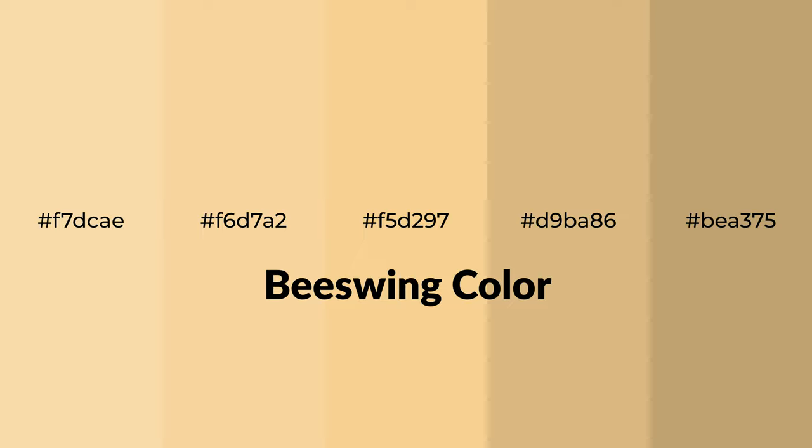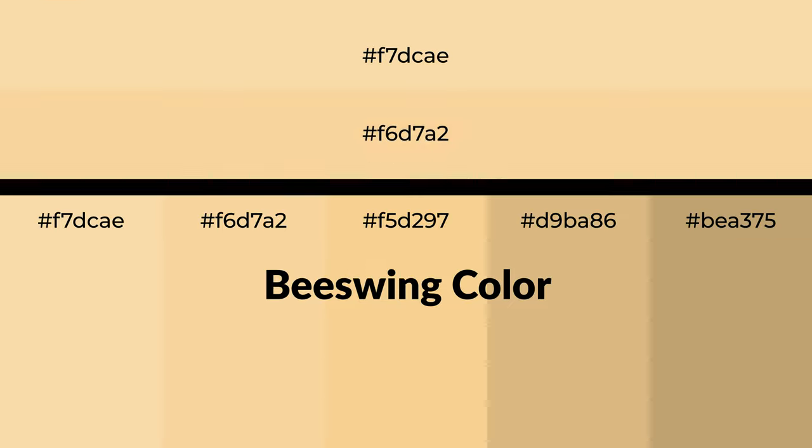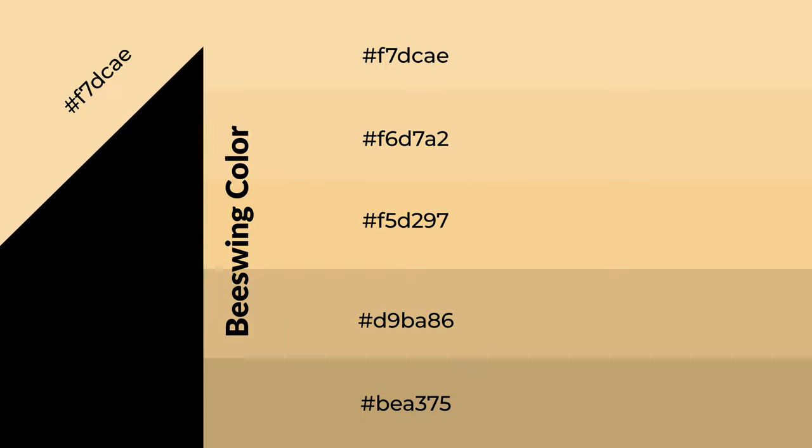Warm shades of beeswing color with yellow hue for your next project. To generate tints of a color, we add white to the color. Tints create light and exquisite emotions. To generate shades of a color, we add black to the color, and it is used in patterns, 3D effects, and layers. Shades create depth and drama.